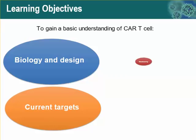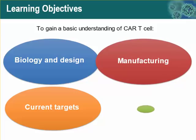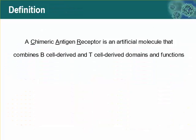What are CAR T cells? CAR is an acronym that refers to chimeric antigen receptors. These are artificial molecules that combine B cell-derived and T cell-derived domains and functions. To understand why you might want a receptor like this, we have to go back to the basic biology of B and T cell activation.